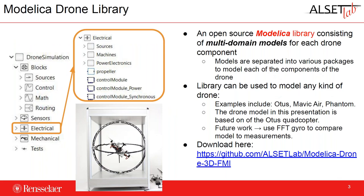This Modelica drone library is an open source library made from the Modelica programming language. It consists of multi-domain models — meaning we're looking at multiple engineering domains including electrical domains with equations like Ohm's law, mechanical equations covering both rotational and force dynamics, and control signals with PID functions. All the models are separated into various packages to model each component of the drone, and this library can be used to model any kind of drone. Right now we have examples for the Otis Quadcopter, the Mavic Air, and the Phantom Quadcopter. This presentation focuses primarily on the Otis Quadcopter, and the link to download this open source library is at the bottom of the slide.